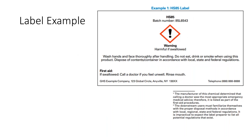This is an example of a label from the OSHA standard — a very basic label. It has the product identifier HS85, batch number 85L6543. It has the exclamation point and 'warning' rather than 'danger.' It says it's harmful to swallow, has a statement about personal hygiene — washing your hands and face after handling. The manufacturer also included a first-aid statement about swallowing, instructions to call a doctor if unwell, and the mandatory address, name, and telephone number of the manufacturer.